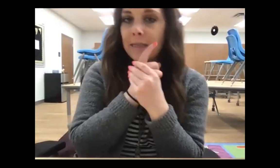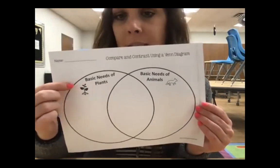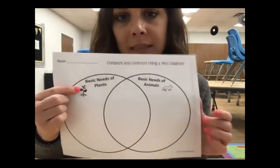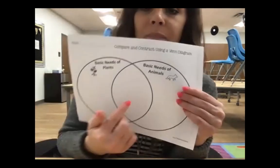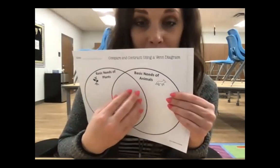So we're just going to take turns playing that game and practicing identifying the needs of plants and animals. Then the next thing students are going to do is complete the Venn diagram independently. This side says basic needs of plants, this side says basic needs of animals, and the middle says things that both plants and animals need. Let's think back — one basic need of plants is water. Let's think about what plants need.